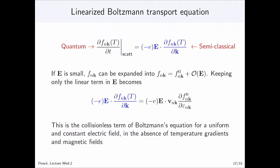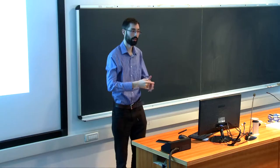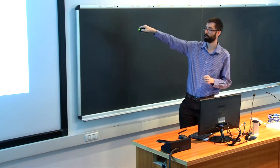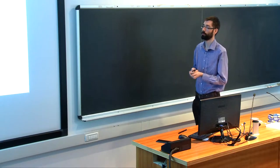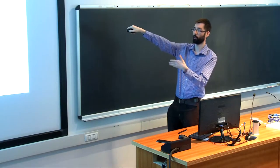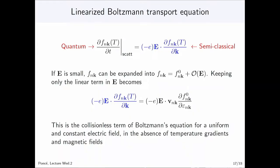We can do a further approximation: the linearized Boltzmann transport equation, which considers that the applied electric field is small. We expand the distribution function to first order in the electric field. f0 is simply the Fermi-Dirac distribution function. We obtain an equation where the velocity comes from dE/dk, which is nothing but the velocity, and then df0/dε_k. We like this term because we can compute everything: the velocity from DFT, and dF0 is simply the derivative of Fermi-Dirac with respect to the eigenenergy.